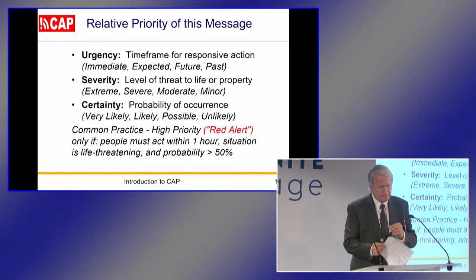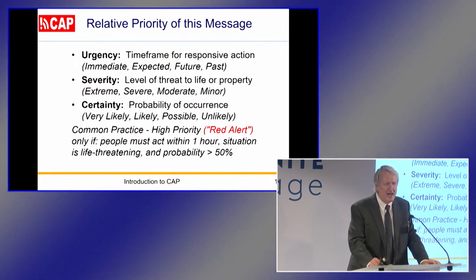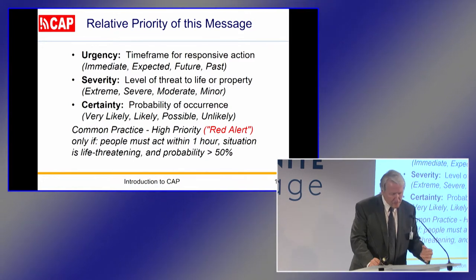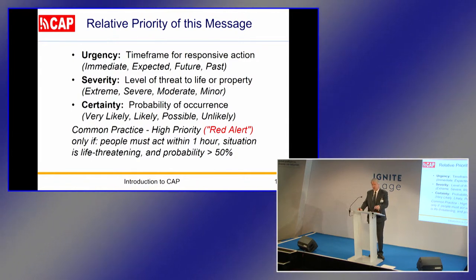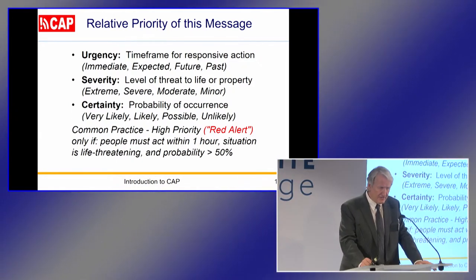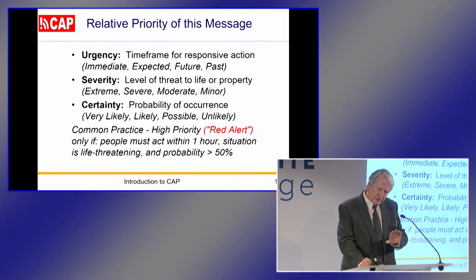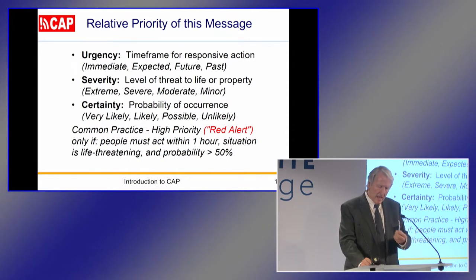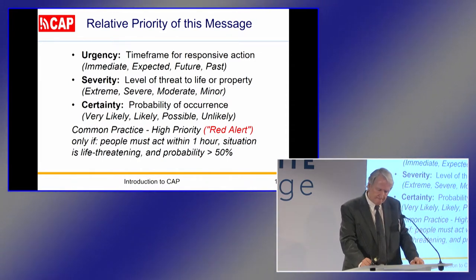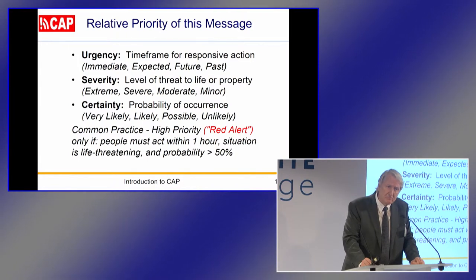For example, the relative priority of this alert is given with three coded values: What's the time frame for responsive action? What's the level of threat to life or property? What's the probability that it will occur? There is already a common practice for high-priority alerts, sometimes called red alerts — where urgency, severity, and certainty are all set at the top two levels. What does that mean? People must act within the next hour. The situation is life-threatening. And we're at least 50% certain.